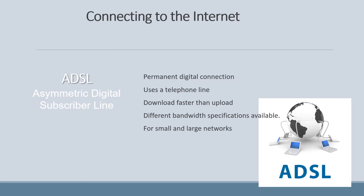The different kinds of connections we have include ADSL, which stands for asymmetric digital subscriber line. It is asymmetric because the download and upload speeds are different. It is a permanent digital connection over normal telephone lines, and the download speed is much faster than the upload speed — data coming to you is faster than data you send out. Different bandwidth specifications are available, and if you're prepared to pay more you'll get a faster line. It is used for both small and large networks.